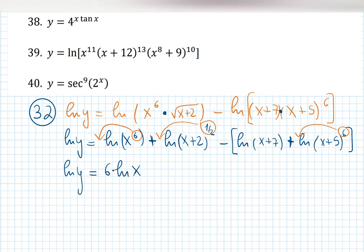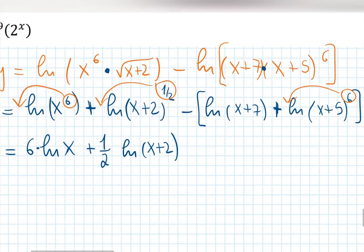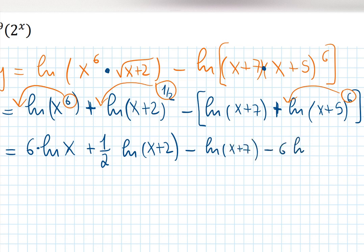It's easier to have a product of a constant times a log than log of x to the 6. So we have: 6·ln(x) plus one-half·ln(x+2), minus — and I distribute the negative sign everywhere — minus ln(x+7), minus 6·ln(x+5).